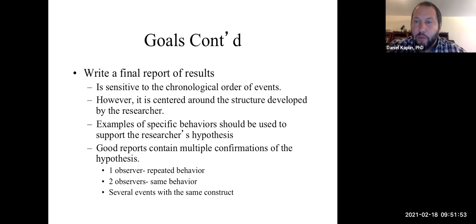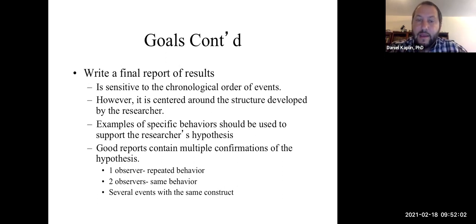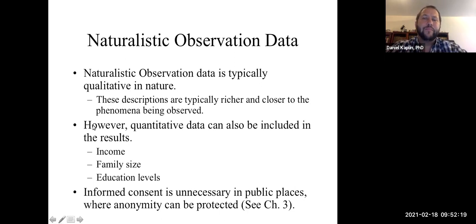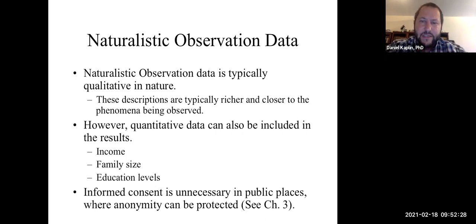If you have multiple observers — two or more — you could compare notes to see if you experienced the same thing and get multiple confirmations across people, not just across time. Before we make any conclusion about a community, we need to have multiple portrayals. Naturalistic observation is typically qualitative, and the goal is to give rich description about what's happening with that individual or community, trying to paint a picture. The best way to paint a picture is with words.